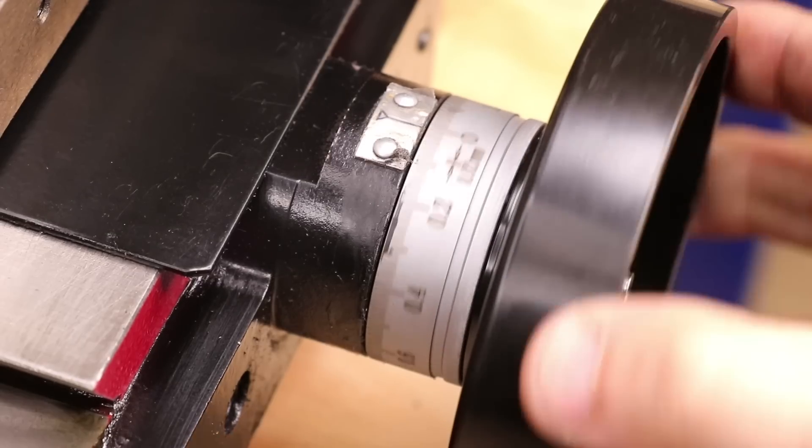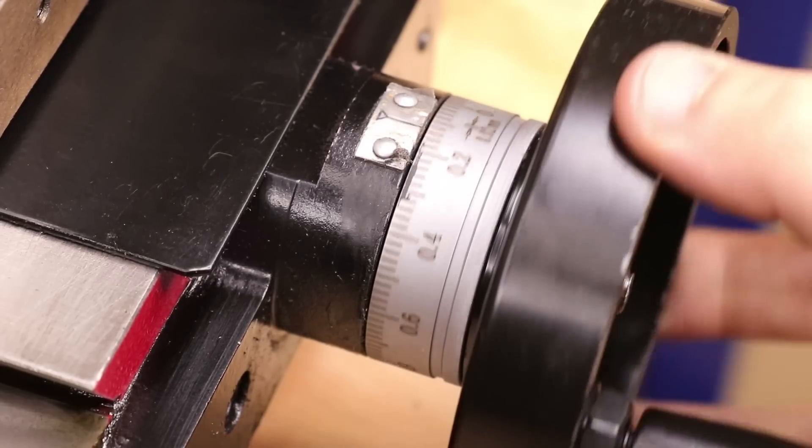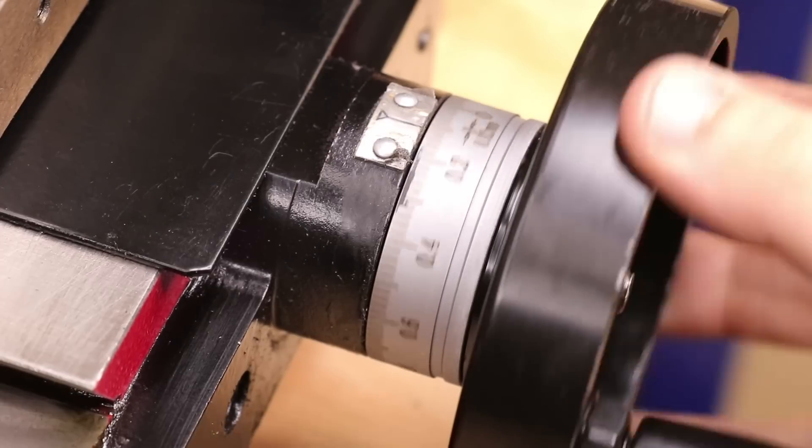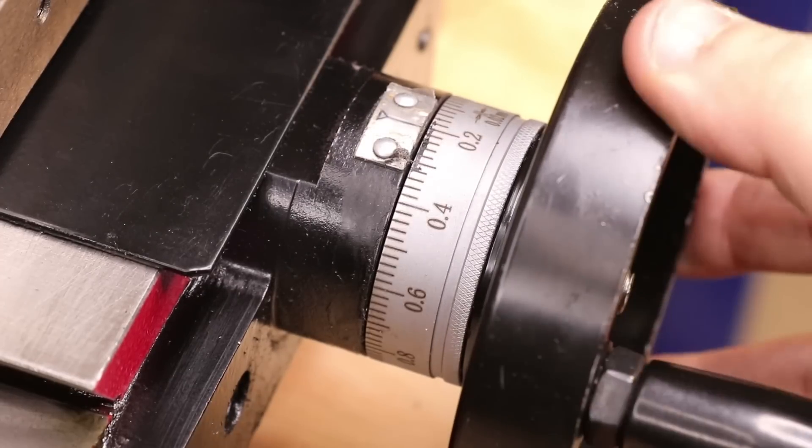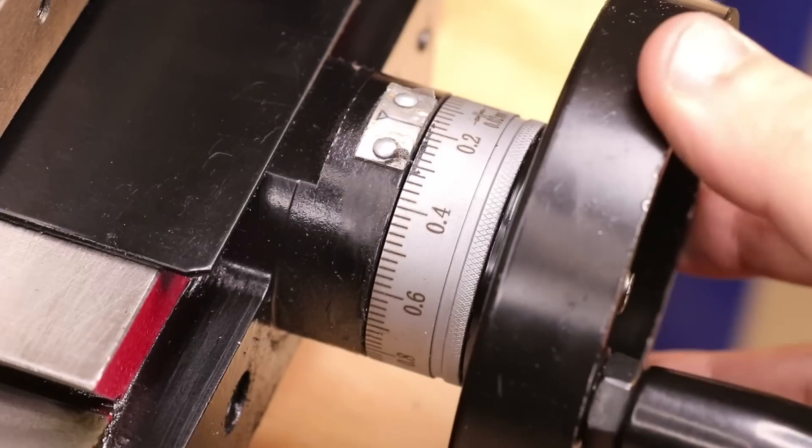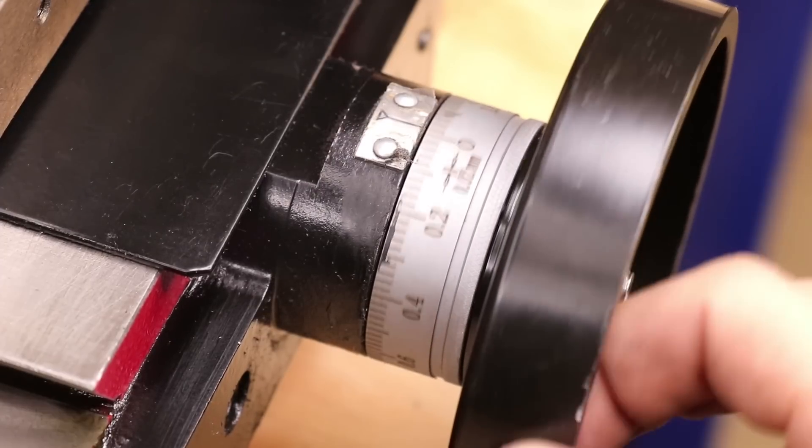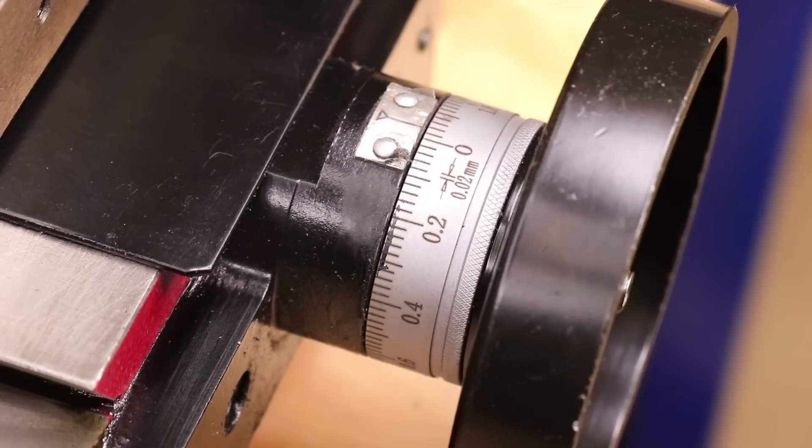Now, on every machine tool, backlash is going to be unavoidable, but here, it's actually pretty low out of the box. However, I will need to get my head around accounting for backlash in both directions, something that you don't usually have to do on a lathe. On a lathe, you just back it out, and then back it forwards to get rid of the backlash.